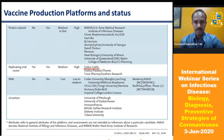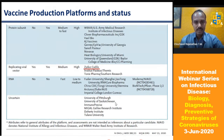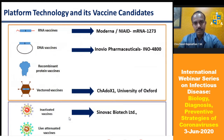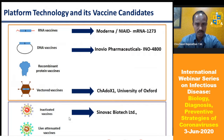For RNA vaccines, Moderna has already moved forward — this was the first vaccine to go into phase one trial very quickly. Given that traditional vaccine development takes six to eleven years with a big timeline, how was it possible to enter into a phase one trial so rapidly?